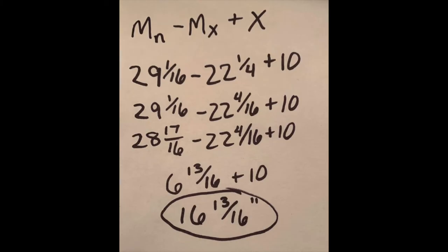The height that we had measured with the laser level for the post that we're calling A was 29 and 1/16 inches. So we're going to substitute that value in for M sub N, and we get 29 and 1/16th minus 22 and 1/4th, which is the measurement that we took with the laser level off the first post, the shortest post, tallest pier, and then we add 10, which is the height of the shortest post.